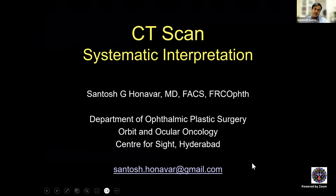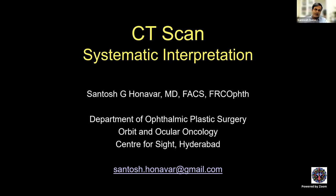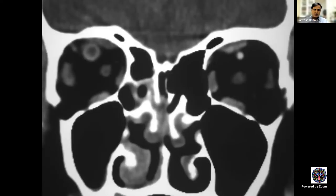Good evening. Last Wednesday, you had a very elaborate class on MRI scan. Now I'm talking about its poor cousin, CT scan. CT scan is not really such a poor cousin of MRI — it's very useful. As ophthalmologists, we are more used to reading CT scans than interpreting MRI scans. Interpretation of CT scans is fairly easier compared to MRI, and oftentimes it's the most basic investigation that most ophthalmologists have access to. MRI is a little more expensive and also takes time to get access to.